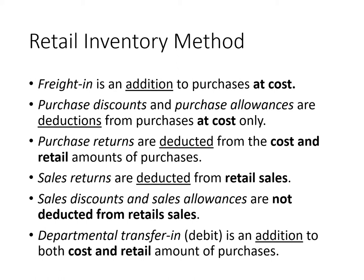If an item needs to be added or deducted both at cost and retail, the data for both cost and retail are usually given. The technique is: if there is movement of inventory (either incoming or outgoing), both cost and retail are affected. Purchase discounts and purchase allowances are deducted from cost only since no inventory moves. Purchase returns, however, are deducted from both cost and retail amounts because there is inventory movement.